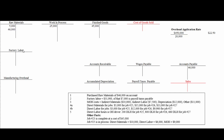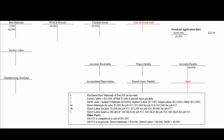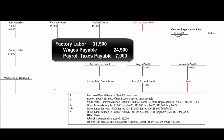Next, the company uses an account called factory labor, which lumps together both direct labor — people working hands-on on whatever they're making — and indirect labor, such as supervisors and inspectors. Factory labor costs total $31,900, of which $7,000 is payroll taxes. So we debit factory labor for the total and credit wages payable for $24,900 and payroll taxes payable for $7,000.